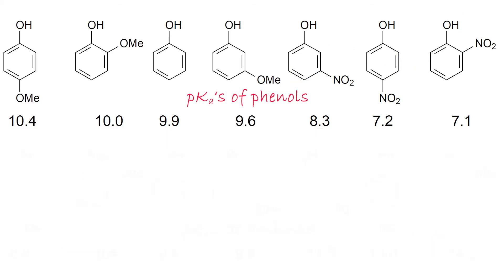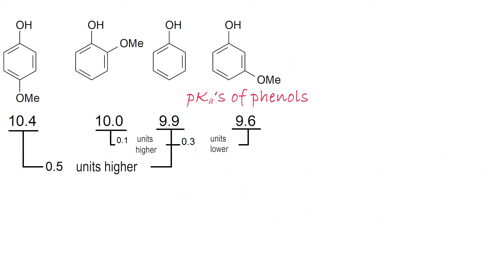On its part, at the other extreme of pKa phenol range, the O-methyl group seems to be playing hot and cold, because in ortho and para positions, it diminishes phenol acidity by 0.1 and 0.5 pKa units, whereas in meta, it increases it by 0.3 pKa units.